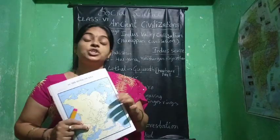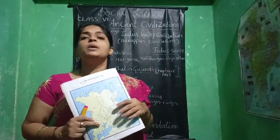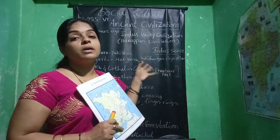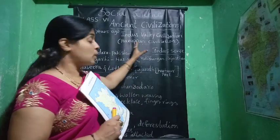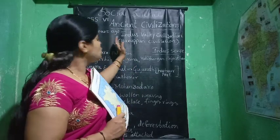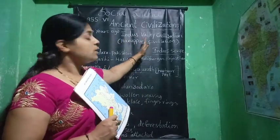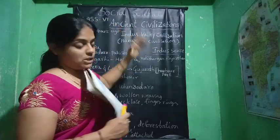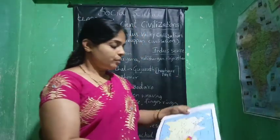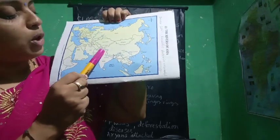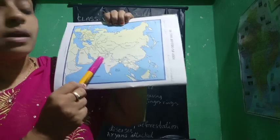So today, one more civilization that we have already discussed in the prehistoric society during the Neolithic age. Once again we are going to learn more about the Indus Valley civilization, or the Harappan civilization. Almost 2000 years ago, this Harappan civilization was started on the bank of river Indus.